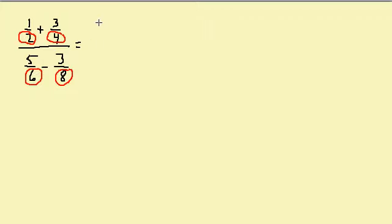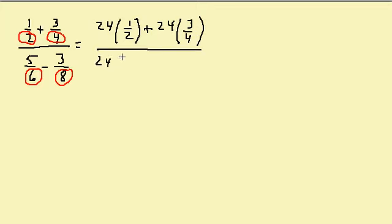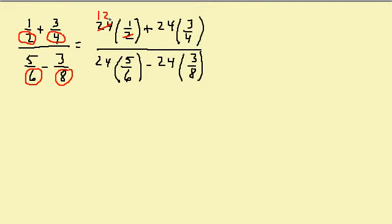This is going to give me 24 times 1/2 plus 24 times 3/4 over 24 times 5/6 minus 24 times 3/8. So now let's see what we have. The 24 and the 2 cancel, so I'm left with 12.